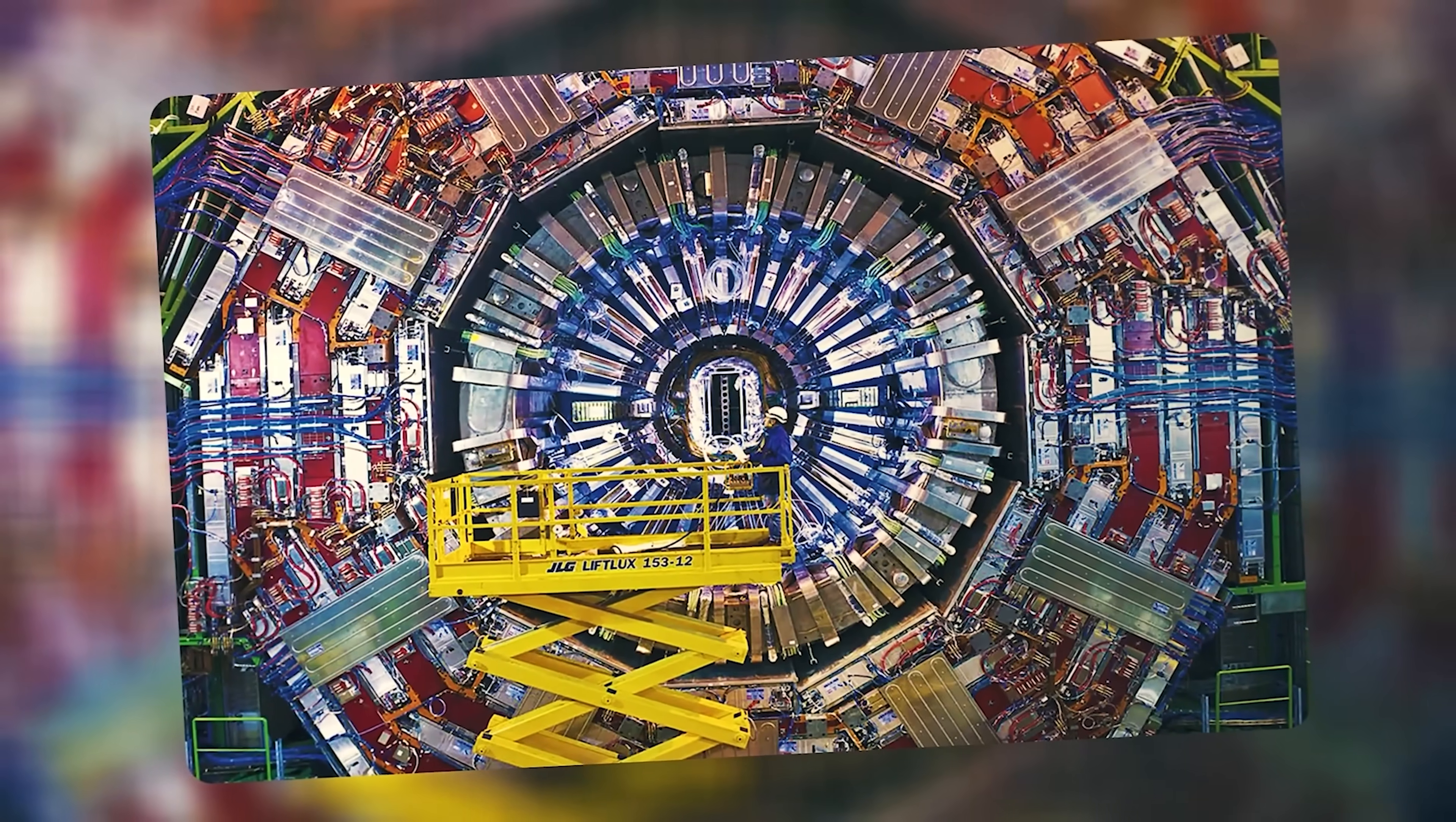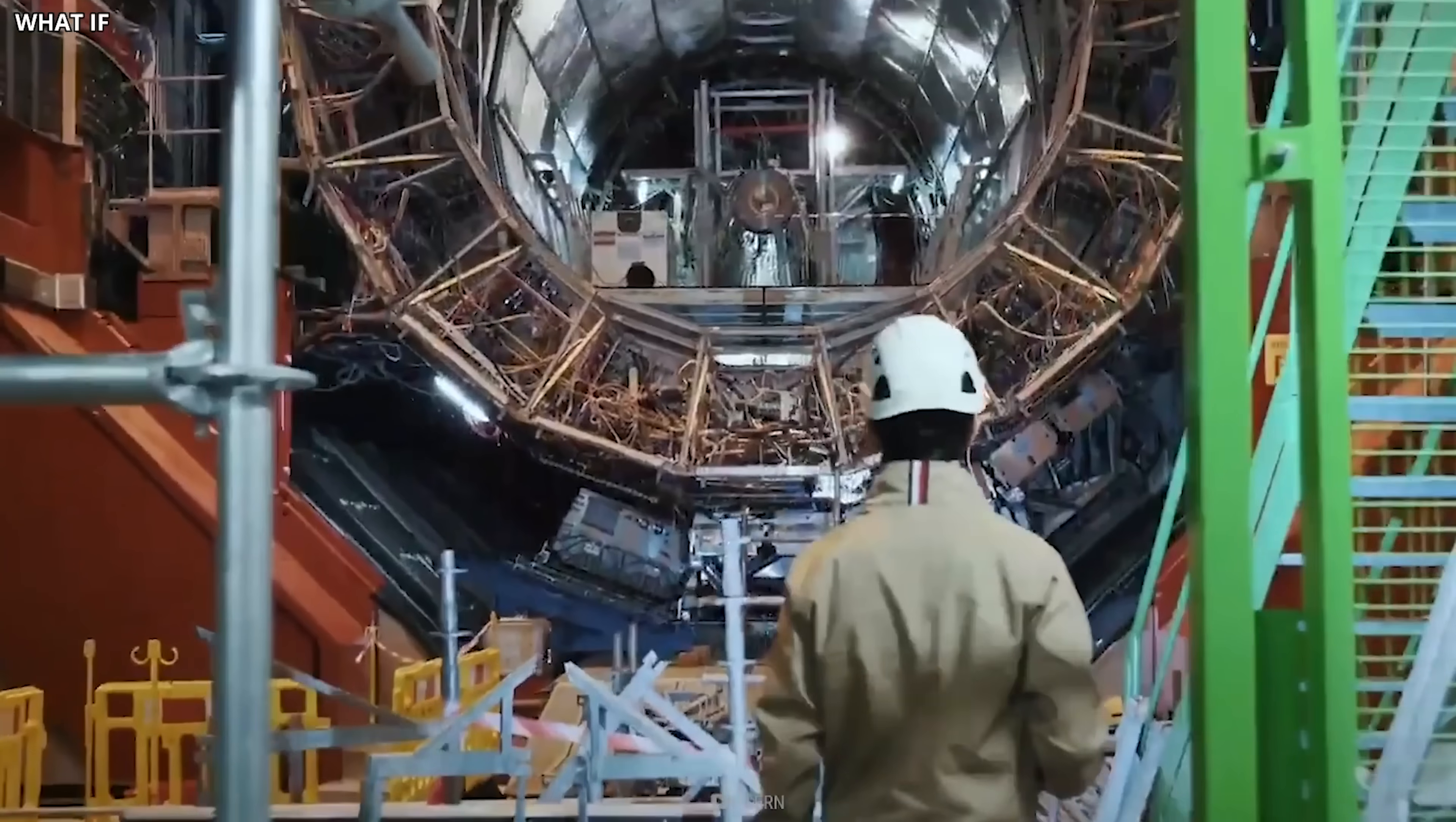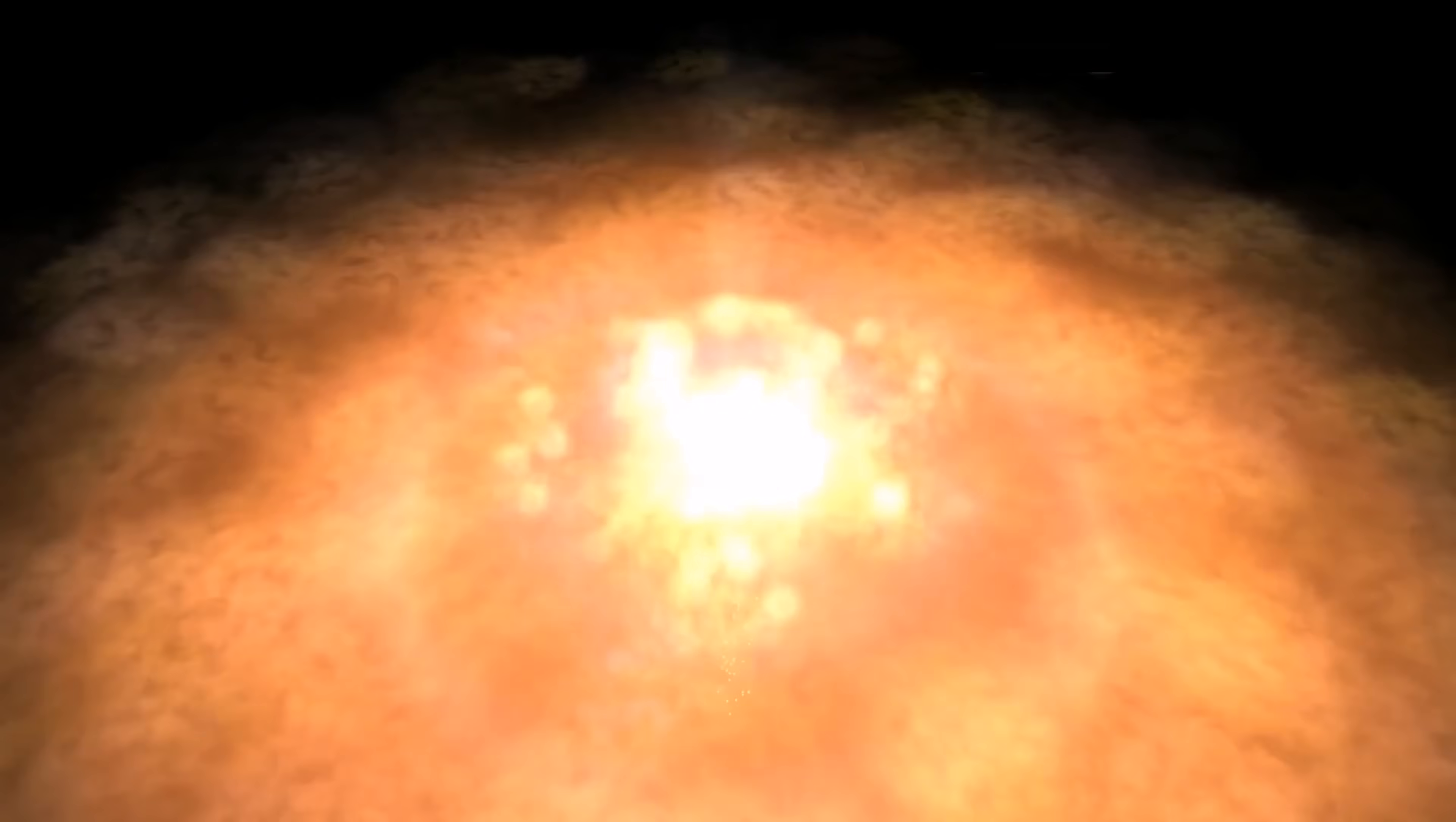Let's talk about how insane the LHC is. This thing is a 17-mile ring buried hundreds of feet underground, built by thousands of scientists from around the world. It has a bunch of giant experiments, each trying to solve a different, crazy physics question. While some experiments were hunting for the Higgs boson, the Large Hadron Collider beauty experiment was on a different mission, to figure out why matter particles, like protons and neutrons, won the cosmic war.